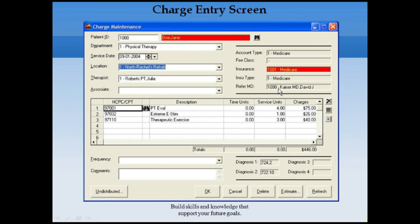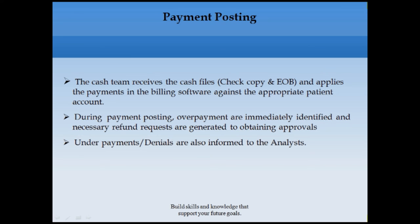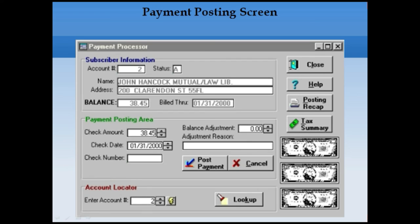Once the claim reaches the insurance company, they review it — this is called the adjudication process. They check the CPT code, DX code, and medical records. If it is a clean claim, they release payment to the doctor. The payment comes along with a check and an EOB (Explanation of Benefits). The payment posting team then updates this information in the respective patient account — posting the payment if paid, or recording the denial information if the claim was denied.